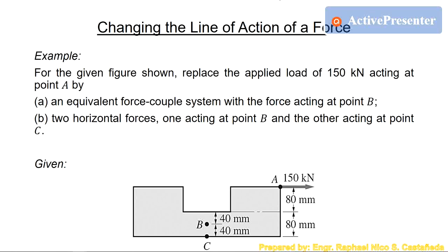Let's have an example. For the given figure, replace the applied load — a 150 kN force acting at point A — by: letter A, an equivalent force couple system with force acting at point B; letter B, two horizontal forces, one acting at point B and the other acting at point C. The original figure shows a force acting at point A.